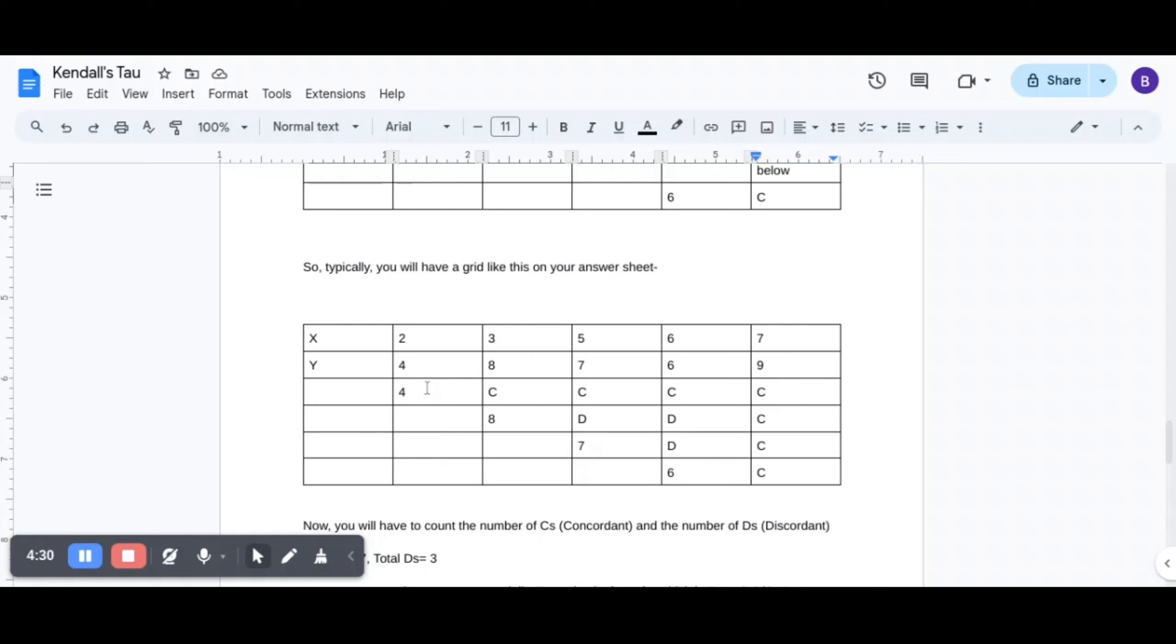Wherein 4 comes down. Then C, C, C, C. And then 8 comes down. And D, D, C. And then 7 comes down. And then D, C. And then 6 comes down.